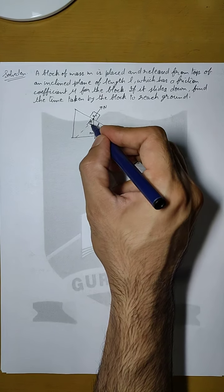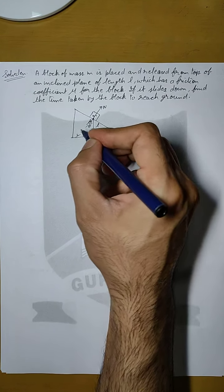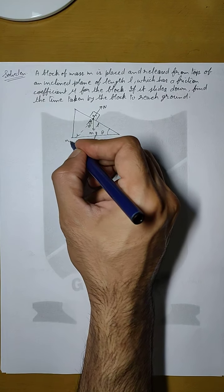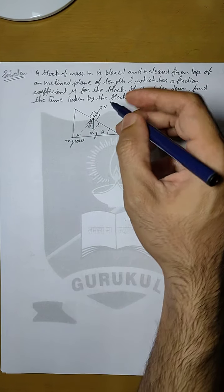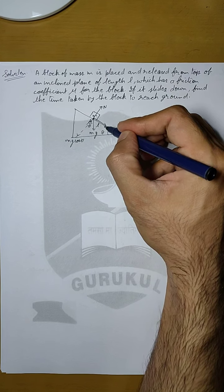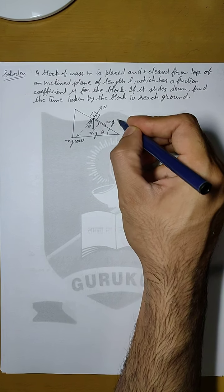So in vertical direction if this is theta then this angle will also be theta. So we have opposite to N, we have the force Mg cos theta. Another component of Mg will be acting in this direction which is Mg sin theta.